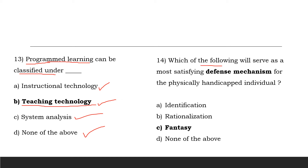Which of the following will serve as the most satisfying defense mechanism for a physically handicapped individual? The options include rationalization. The answer is rationalization — it is the most satisfying defense mechanism for physically handicapped individuals.